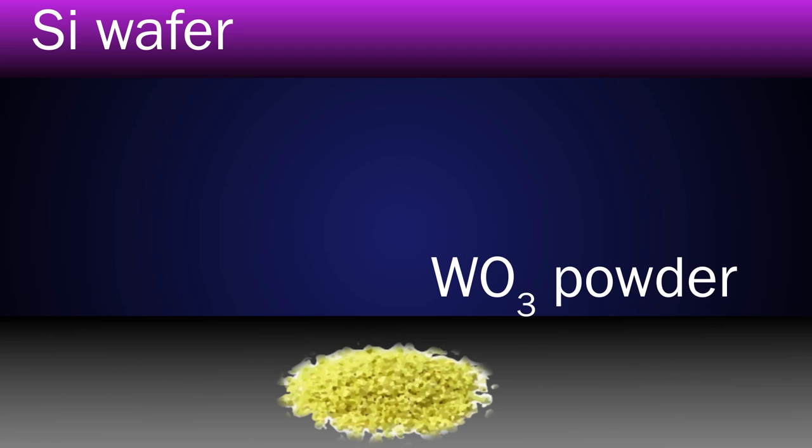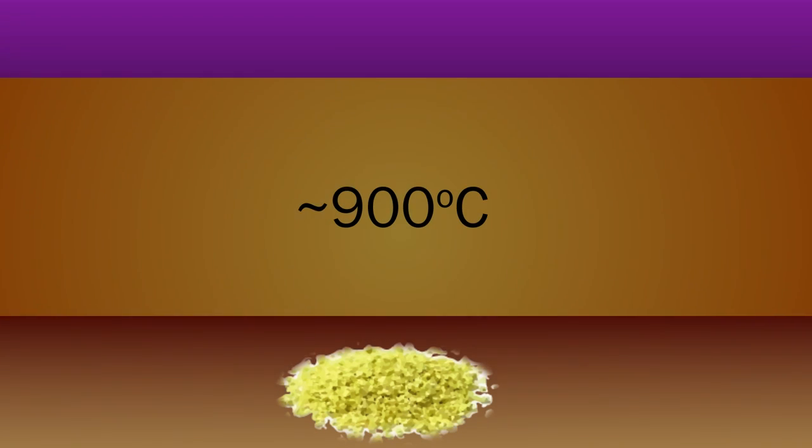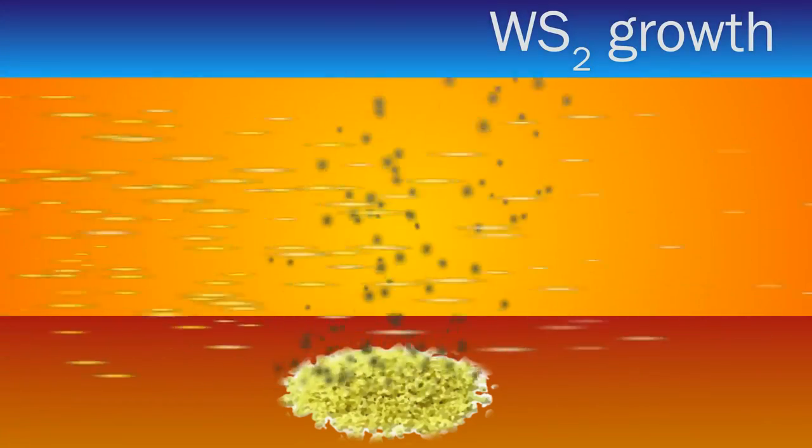As the central portion of the furnace heats up to around 900°C, the tungsten oxide powder begins to sublimate. The sulfur, which is heated in a separate portion of the furnace, flows in along with inert gas and reacts with the oxide while depositing tungsten disulfide on the silicon wafer.